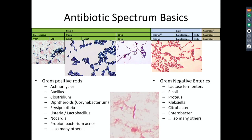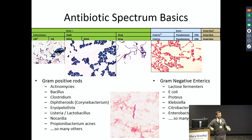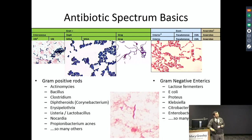Here's an interesting bacteria we found recently. Is this gram-positive or gram-negative? Gram-negative — so it washed out. You might notice it's got this little spiral shape to it. This bacteria's name is Spirillum, and this causes rat bite fever, which I've always read about but never actually seen a case of until a couple weeks ago.